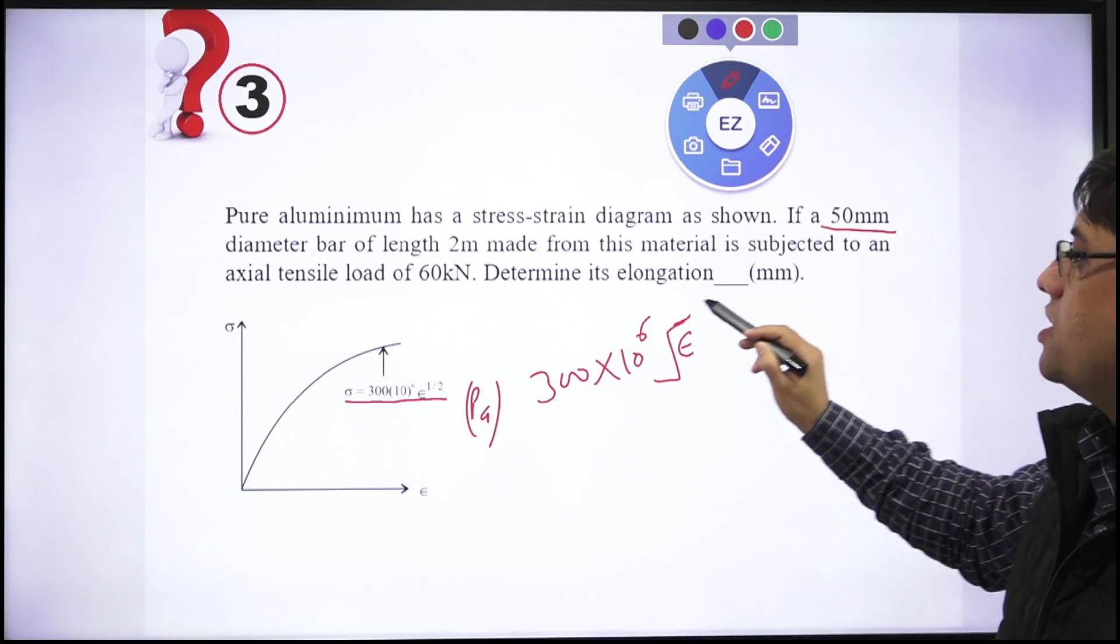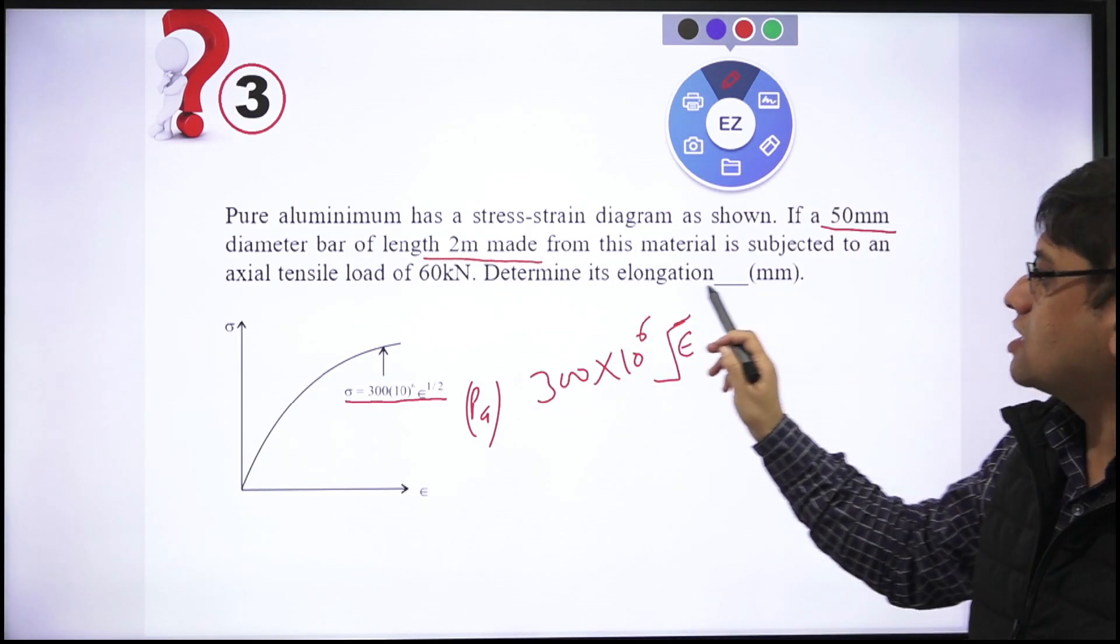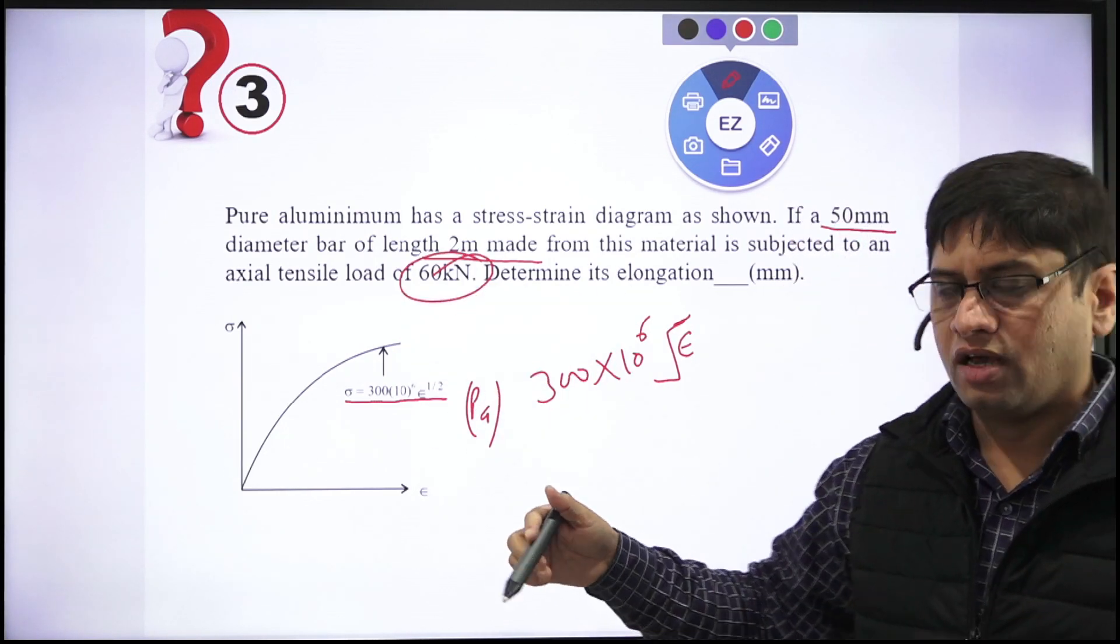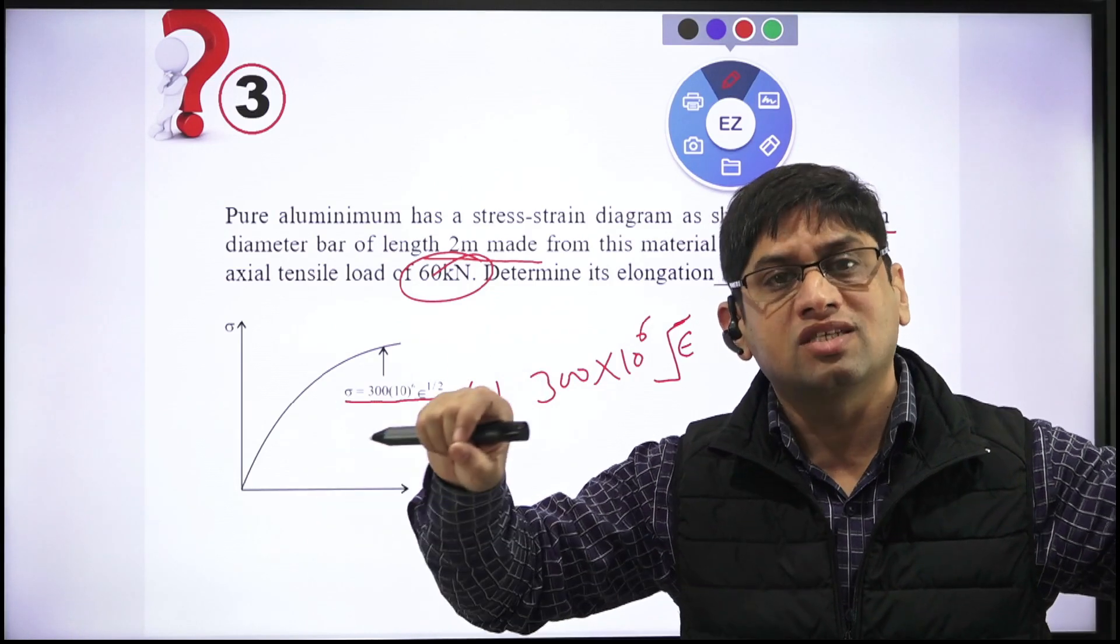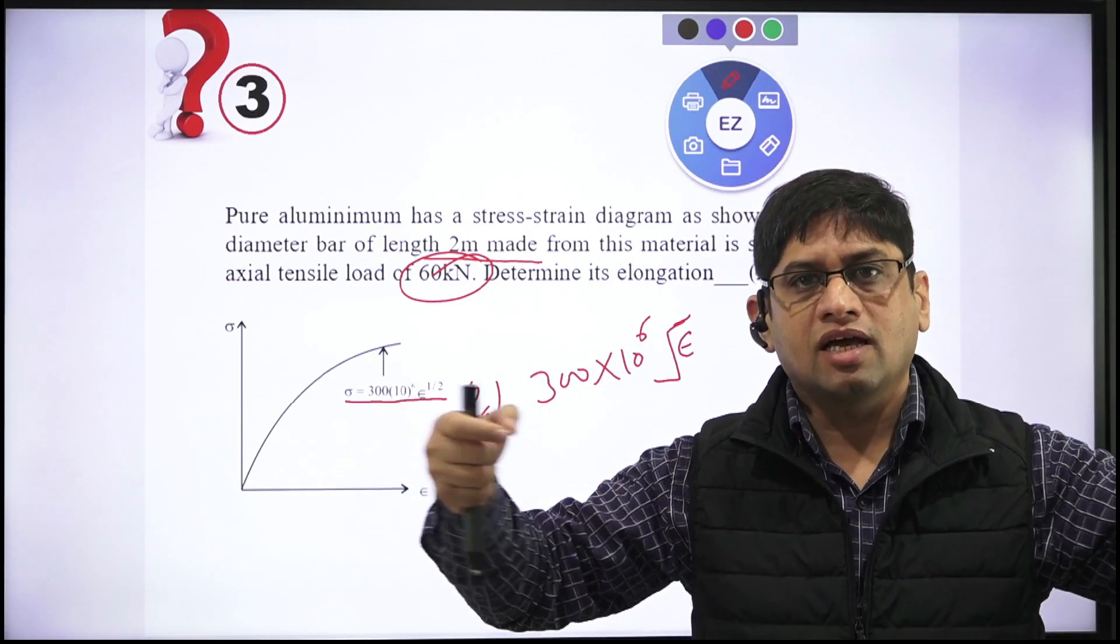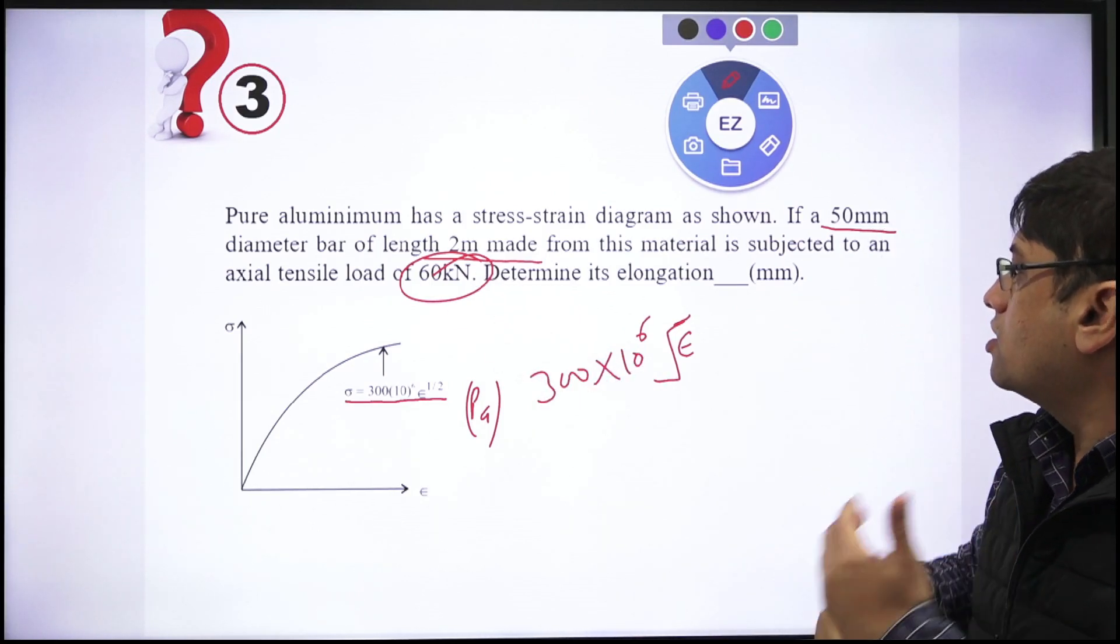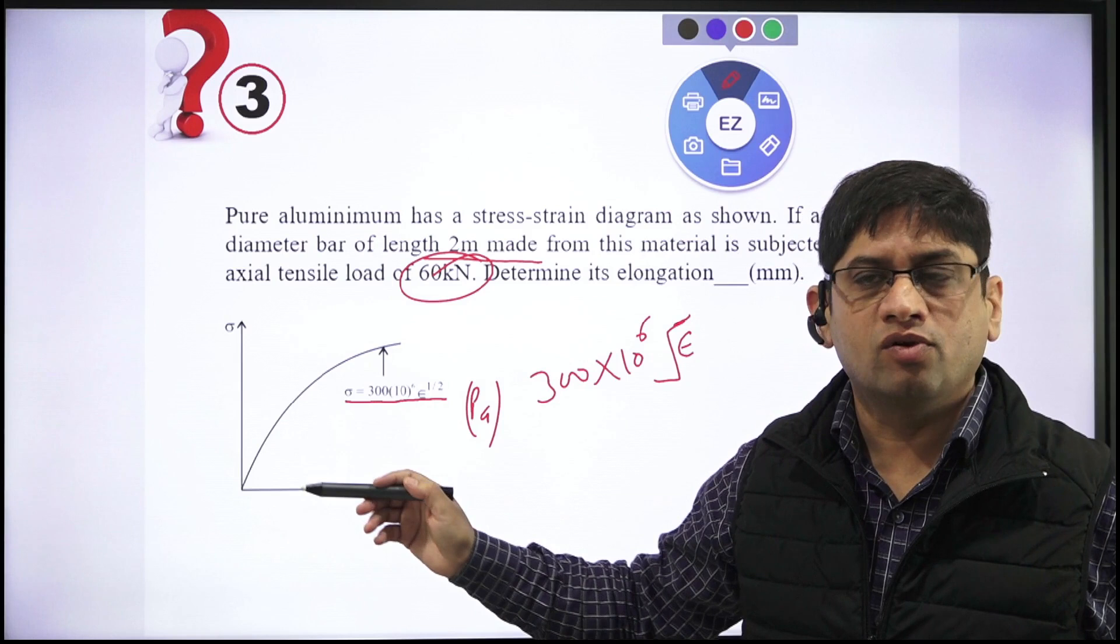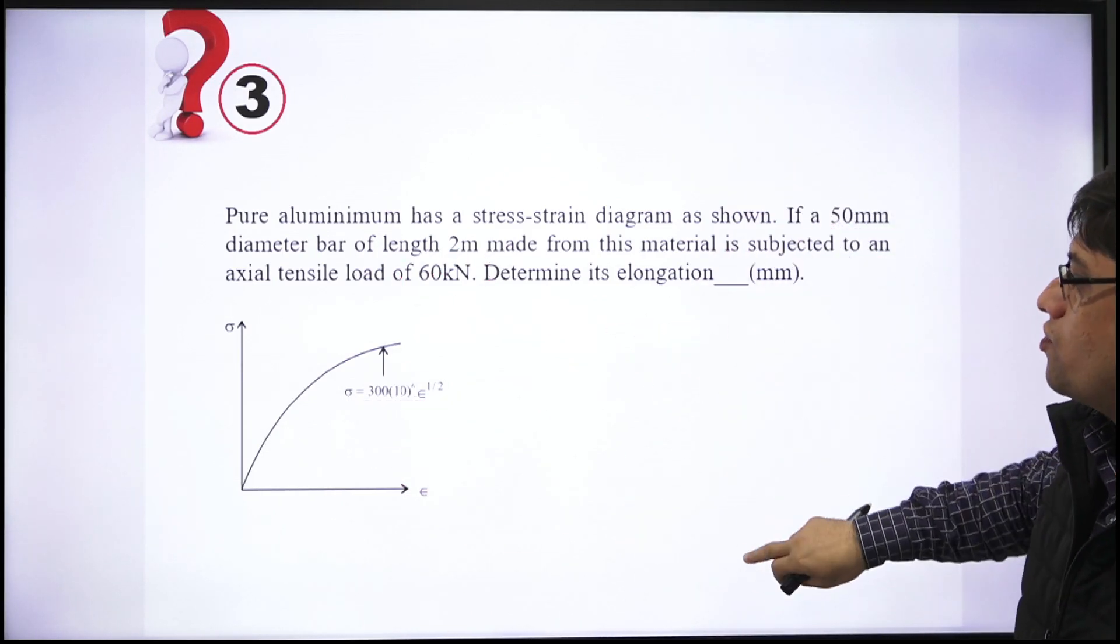Sigma is the stress given in Pascal, Newton per meter square. Sigma is given to you. You are to tell that if 50 mm is the diameter and length is 2 meters of the aluminum, and there is a tensile load acting of 60 kilonewtons—this basically stress-strain diagram is normally plotted on a universal testing machine where tensile loading is applied. If tensile load of 60 kilonewtons is applied, you have to tell the elongation produced, Delta L.